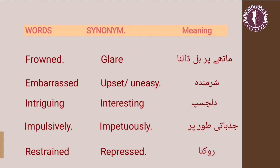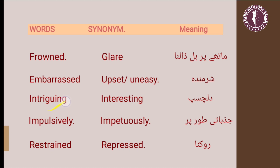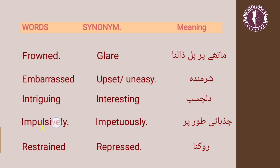Glare ek aisi condition ko kehte hain jis mein hum gusse mein kisi ki taraf dekhte hain. Next word is 'embarrassed.' Embarrassed ka matlab hai sharminda, aur iska synonym hai 'upset' ya 'uneasy.' Next word is 'intriguing.' Intriguing ka matlab hai dilchasp, aur iska synonym hai 'interesting.' Next word is 'impulsively' — jazbati tor par ya spontaneously. Aur iska synonym hai 'impetuously.'